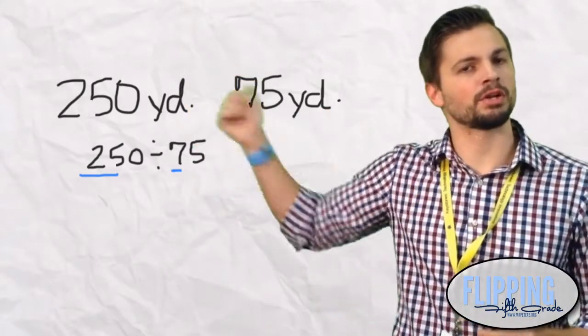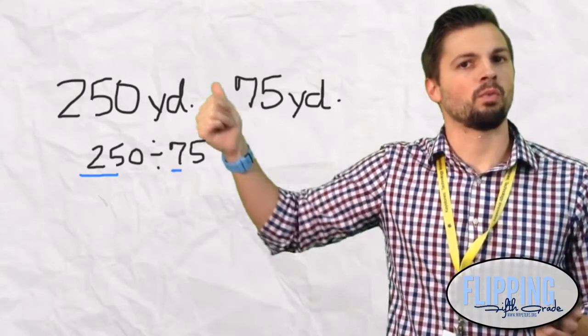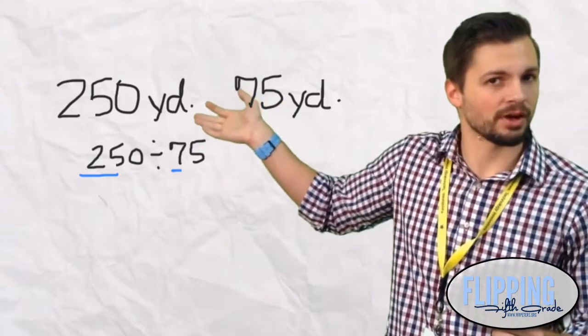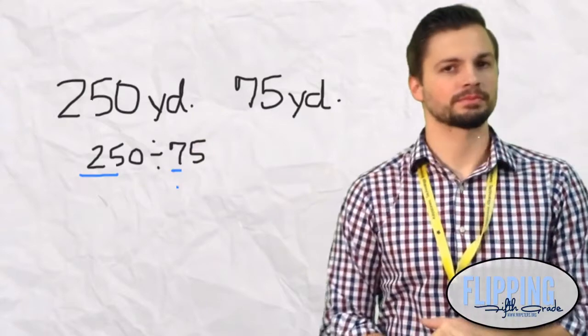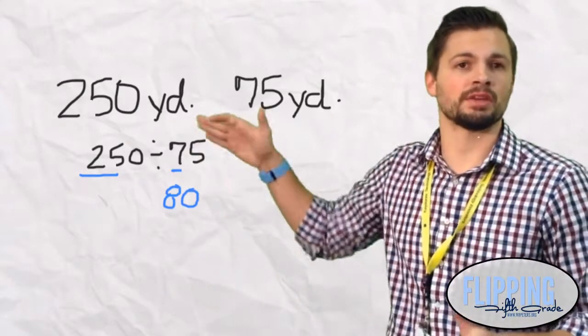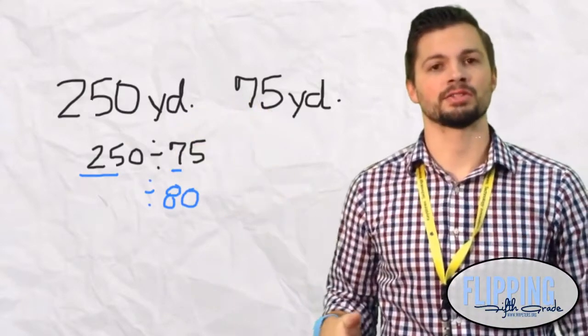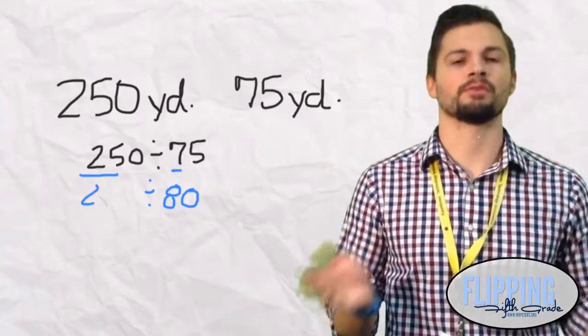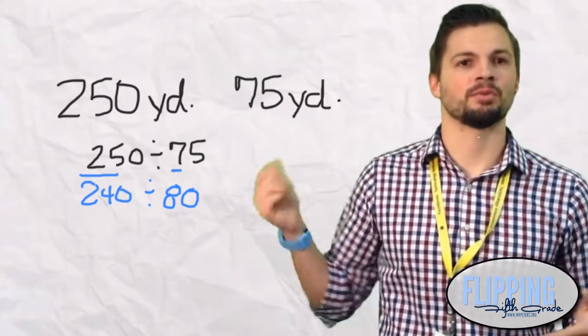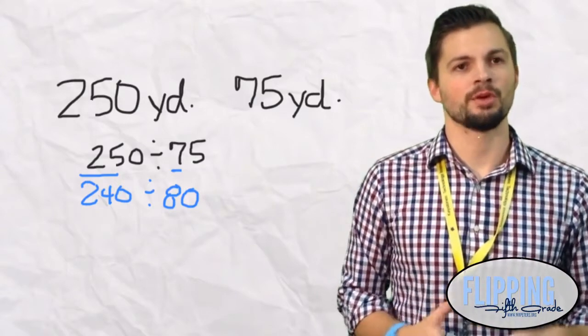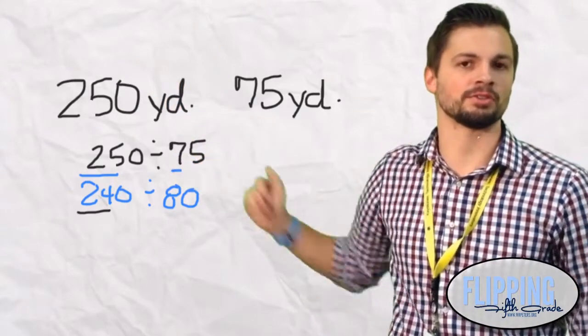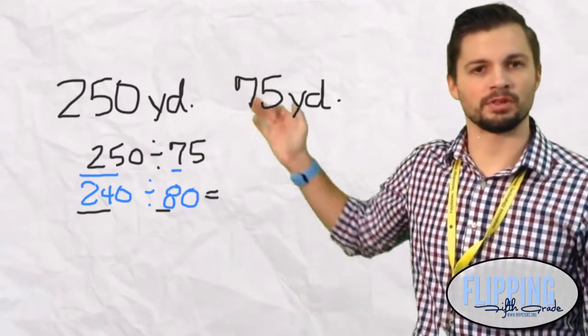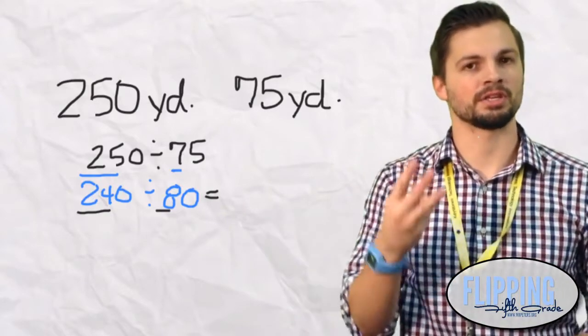I want to underline that 25 and I want to underline the 7. Now what is a number close to 25? We can round that 75, that 7, up to 8 because of that 5. That 5 tells us to round the 7 up to 8. So now we have the divisor of 8. What is the number close to 25 that 8 goes into? And the answer is 24. But remember, we are not dividing by 8 and we are not using 24 as our dividend. We are using 240 because 250 is going to go down to 240 and 75 is going to go up to 80. Now we underline the 24 and the 8. 24 divided by 8 is going to give us 3.